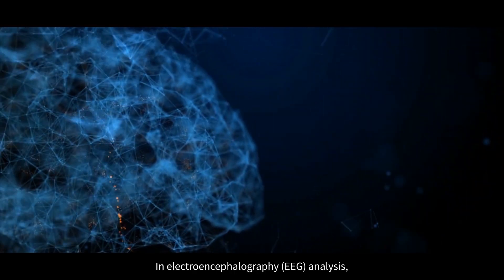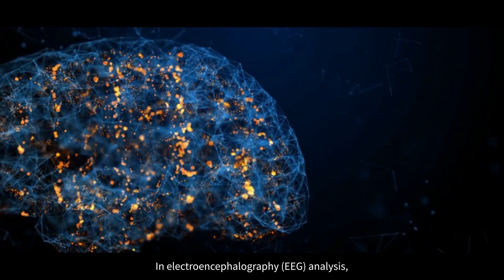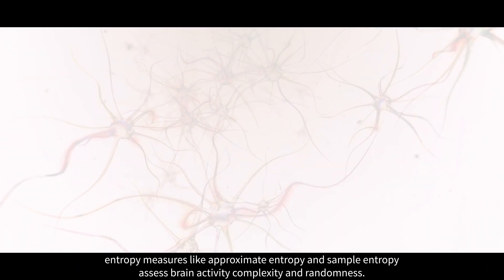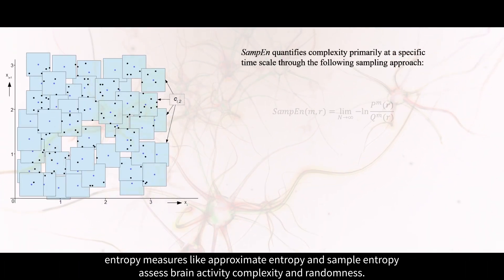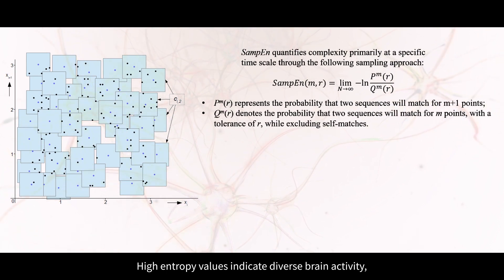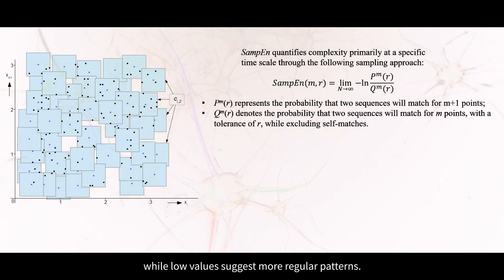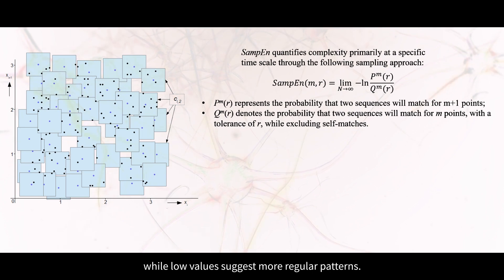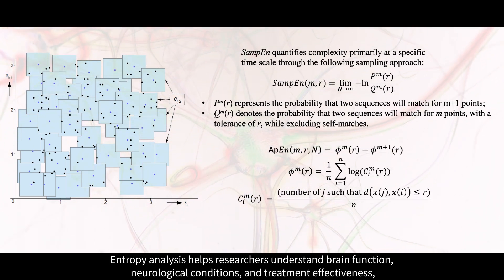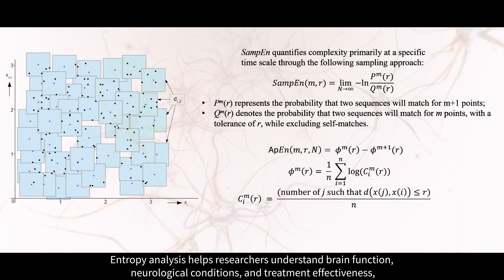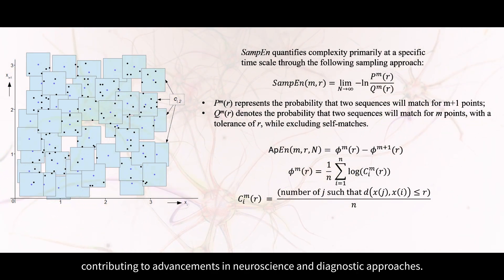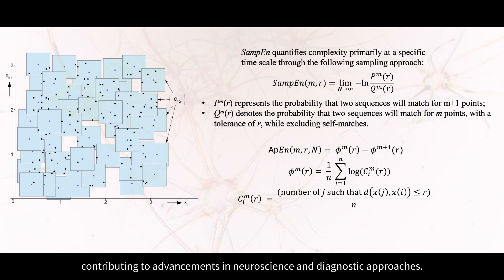In electroencephalography analysis, entropy measures like approximate entropy and sample entropy assess brain activity complexity and randomness. High entropy values indicate diverse brain activity, while low values suggest more regular patterns. Entropy analysis helps researchers understand brain function, neurological conditions, and treatment effectiveness, contributing to advancements in neuroscience and diagnostic approaches.